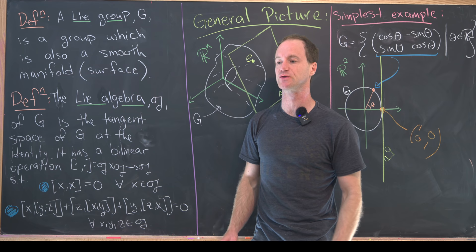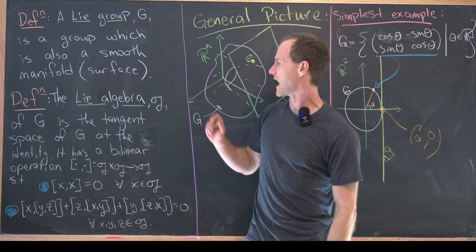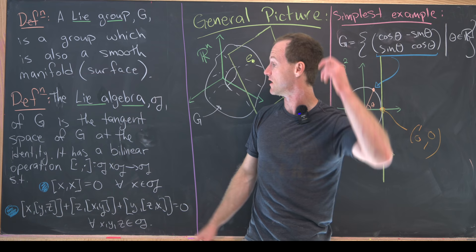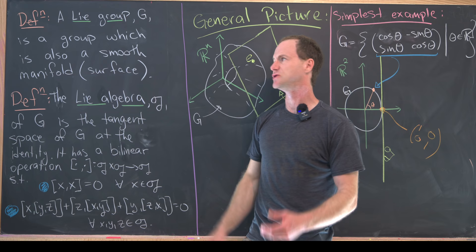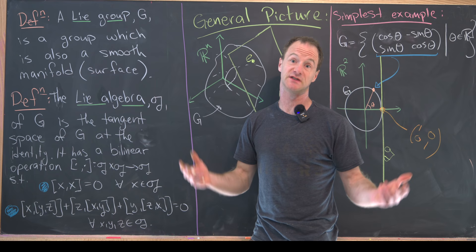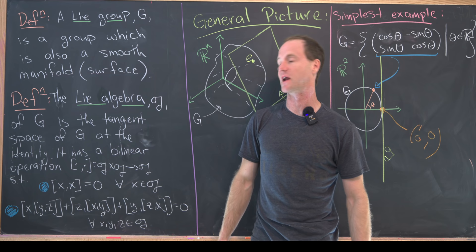The Lie algebra, written as lowercase 𝔤 of G, is the tangent space of the group G at the identity. All groups have an identity, and since this type of group is a smooth surface, you can find the identity on that surface and form the tangent space. That tangent space might be a tangent plane, a tangent line, or something else depending on the dimension.